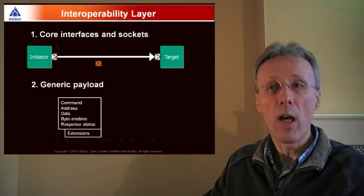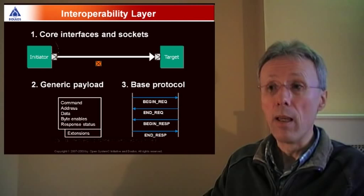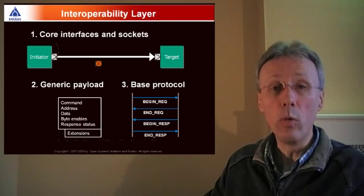And it's a generic payload transaction that's passed through the sockets between the various TLM 2 components. The third step is to use the base protocol. So the base protocol defines a set of phases, marking the beginning and the end of a request and a response, and also captures a set of rules that are used by the initiator and target when making function calls through those standard sockets and passing that standard generic payload backwards and forwards.